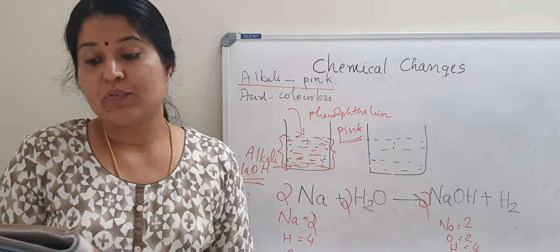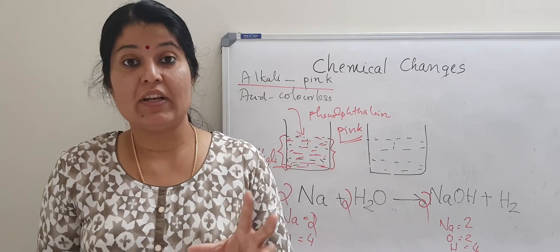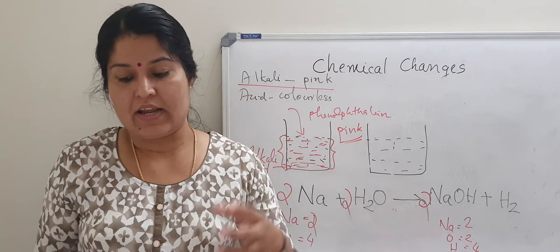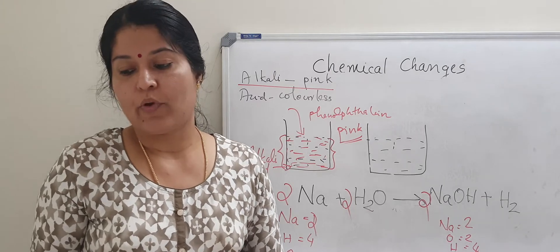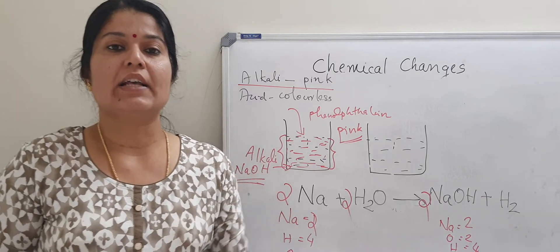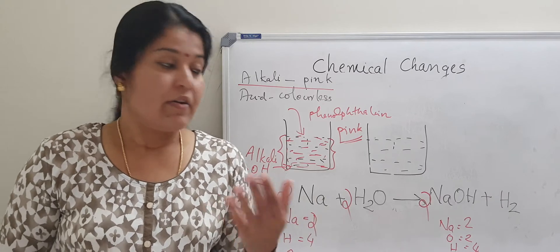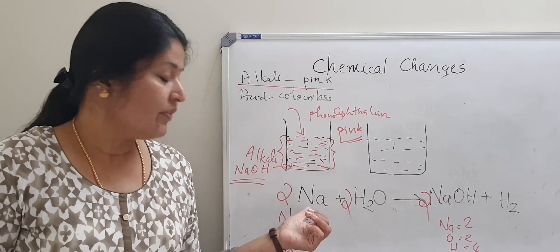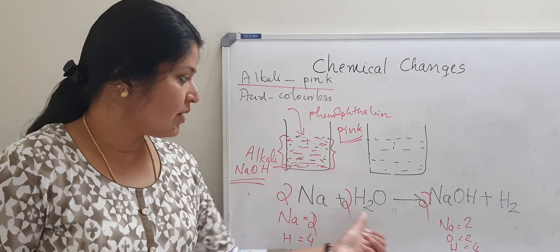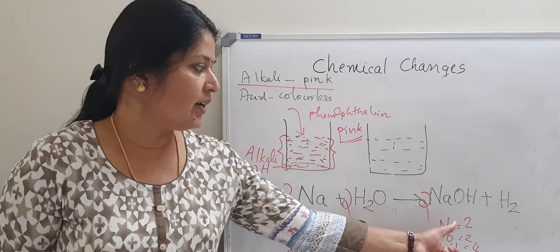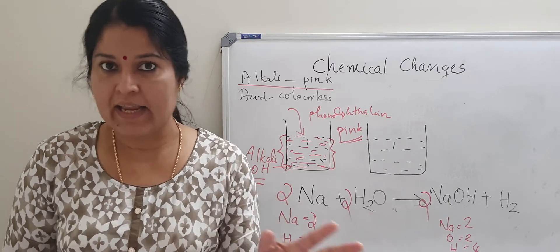The alkali formed by the reaction of sodium with water is sodium hydroxide. Metals like sodium and potassium react vigorously with water to form hydrogen gas and the corresponding alkali. When sodium reacts with water, we get sodium hydroxide; when potassium reacts with water, we get potassium hydroxide.